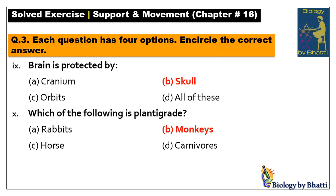Number nine: the brain is protected by the skull. The skull includes cranial bones and facial bones, but overall it is the skull — answer is option B. Number ten: which of the following is plantigrade? Plantigrades place their digits, palms, and soles on the ground when walking. Humans, bears, and monkeys are plantigrades — answer is option B, monkeys.